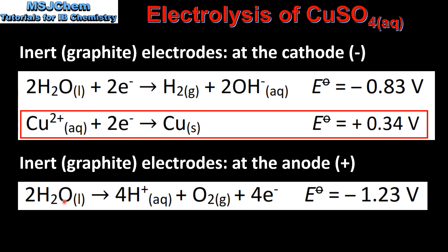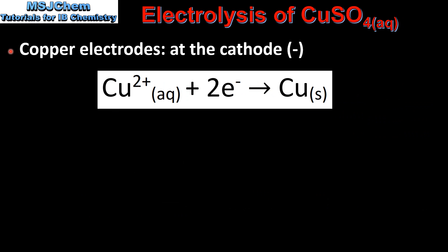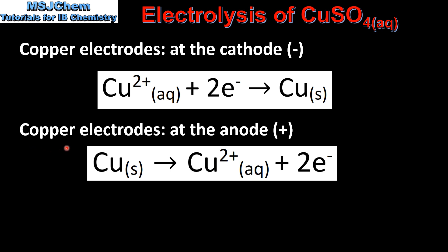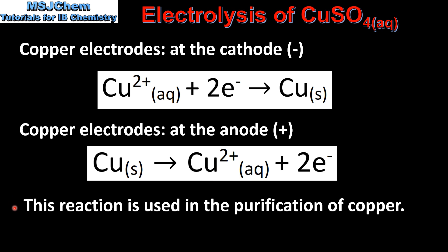At the anode we'll have the oxidation of water to form oxygen gas. Finally, we have the electrolysis of copper sulfate solution using copper electrodes. At the cathode we'll have the reduction of copper(II) ions to form copper metal, and at the anode we'll have the oxidation of copper metal to form copper(II) ions. This reaction is used in the purification of copper.